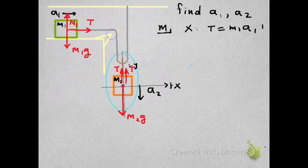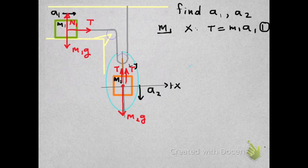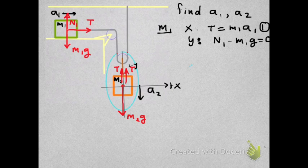So let's write the equations of motion. For M1, from the free body diagram, we get that the tension, the only force acting to the right, should be equal to the mass of that block multiplied by its acceleration. In the y-direction, we have that the normal should be equal to the weight of the block.